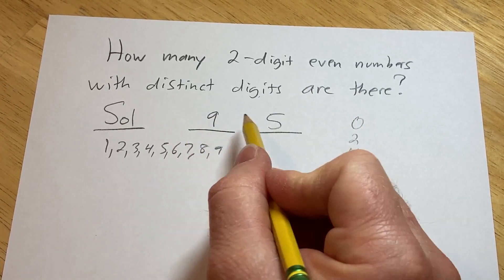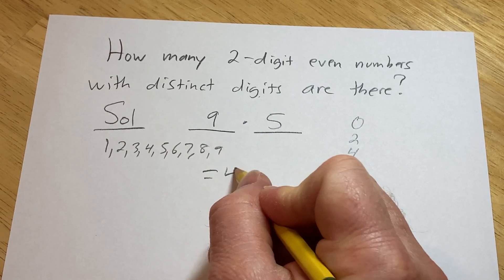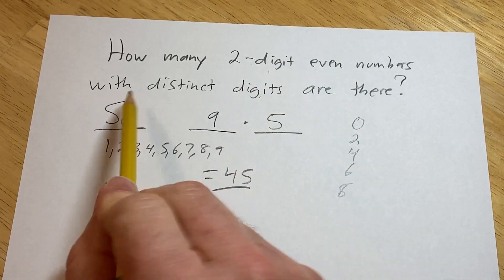So the number of choices for both digits is the product, which is 45. So there are 45 two-digit even numbers.